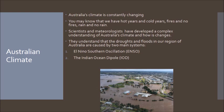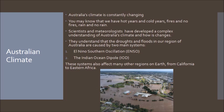Over the next week I'll be looking at these two systems in a lot of detail to really understand what causes the changes in Australia's climate. As I mentioned, these systems also affect other regions on Earth, from California all the way to Eastern Africa. They're not just Australian climate drivers — they drive climate right across the globe.